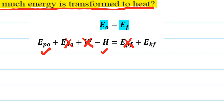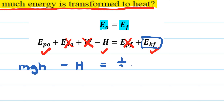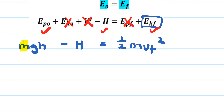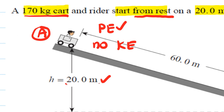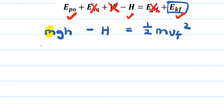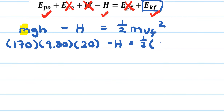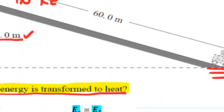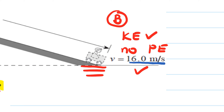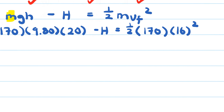Writing the equation: mgh − Q_heat = ½mvf². There is no potential energy at the end but there is kinetic energy from the given final speed. Plugging in: mass = 170 kg, g = 9.80, height = 20 m, and final speed = 16 meters per second. So: 170 × 9.80 × 20 − Q_heat = ½ × 170 × 16².